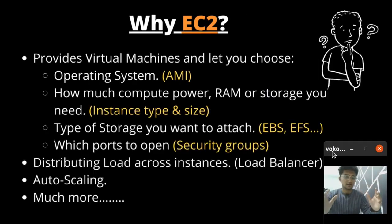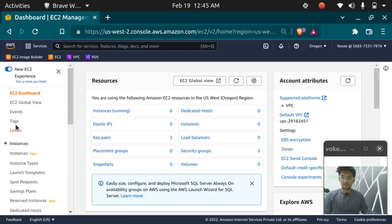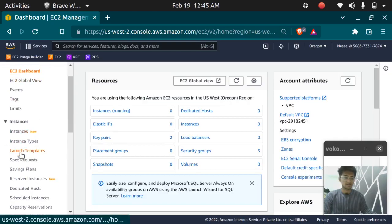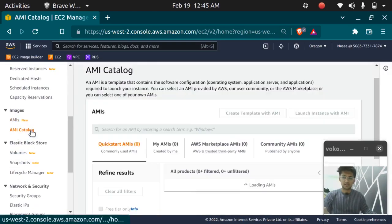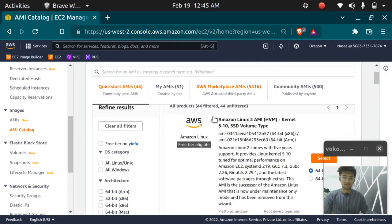Why EC2? Why should we use EC2, or what are the features of EC2? EC2 provides virtual machines and lets you choose the operating system, also known as AMI. Amazon EC2 provides you with a lot of AMIs. In the AMI catalog, you can see a number of different types of AMIs available.